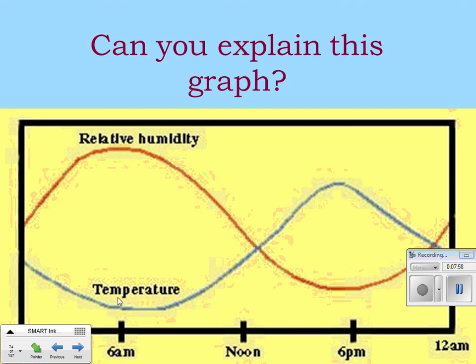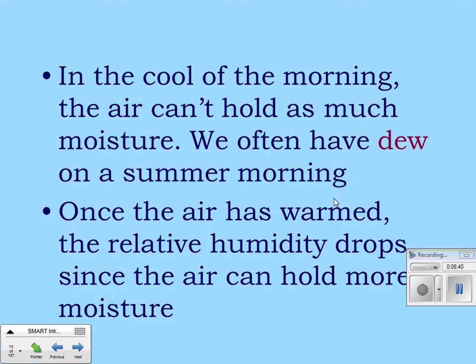Looking at a graph of temperature versus relative humidity: early in the morning, temperature drops overnight and then rises at daylight. The humidity increases overnight, and as soon as the sun rises, humidity starts to decrease. In the cool of the morning, air can't hold as much moisture — we often get dew on summer mornings. Once the air warms, relative humidity drops since the air can hold more moisture.